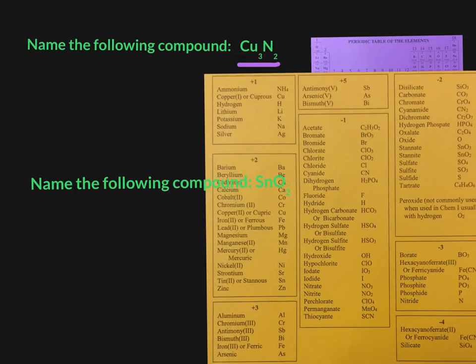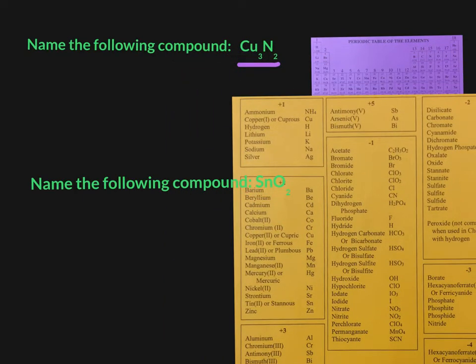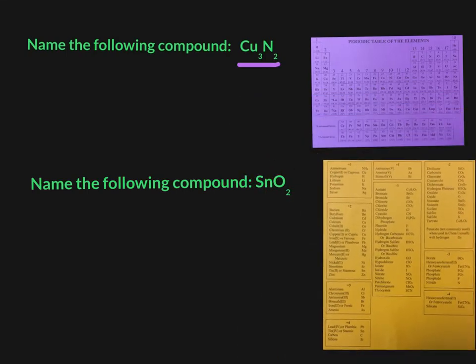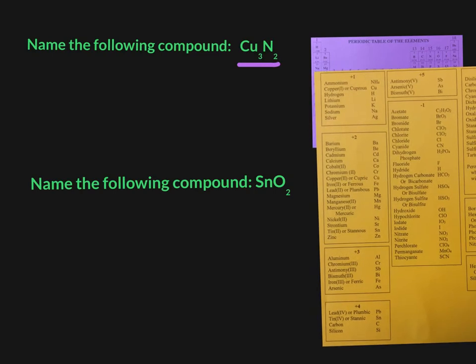We have what we call a list of multivalence charges on our Type II metals, or our transition metals. Copper can either be a +1 charge, copper I or cuprous, or a +2 charge, copper II or cupric. You will get this worksheet, this handout, for you to use. There's also a list in your book as well, until you get to this sheet.